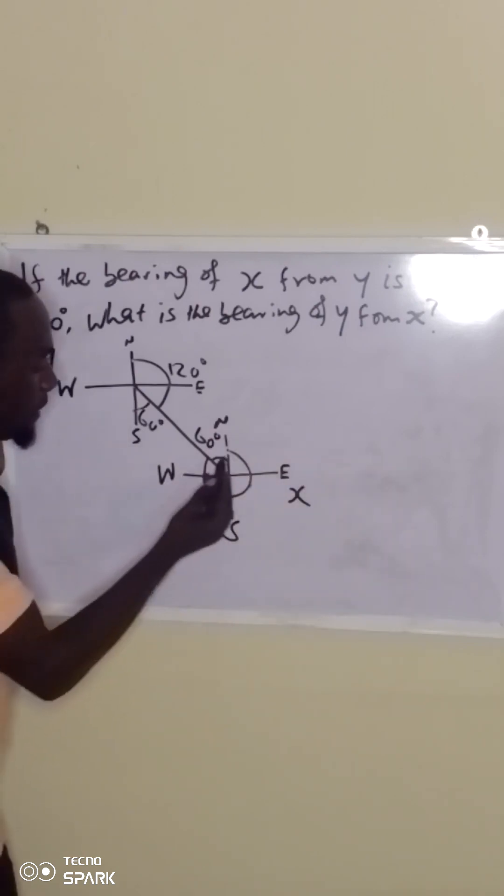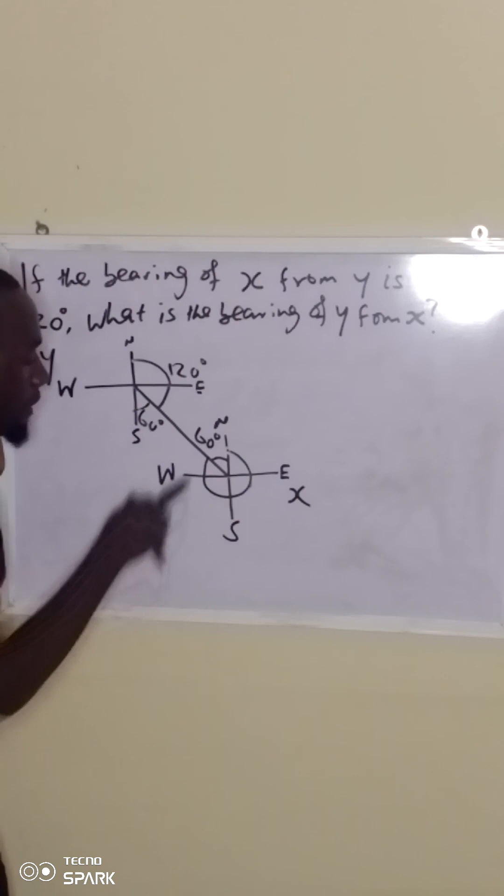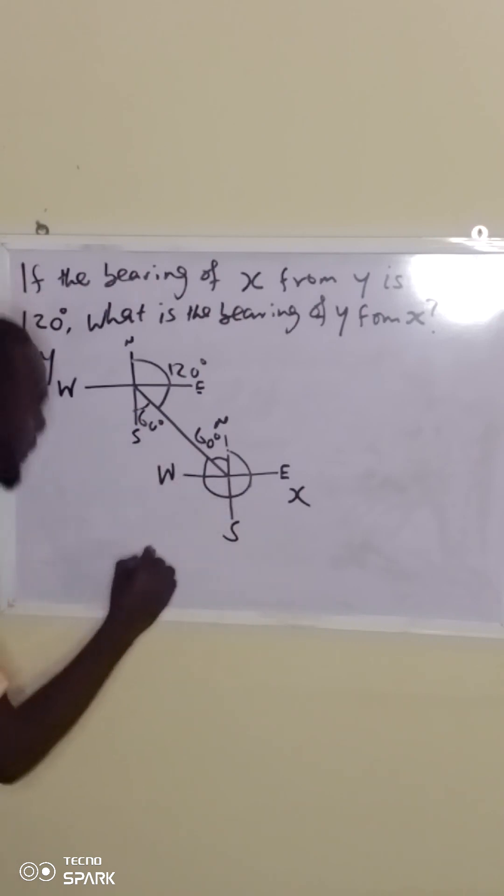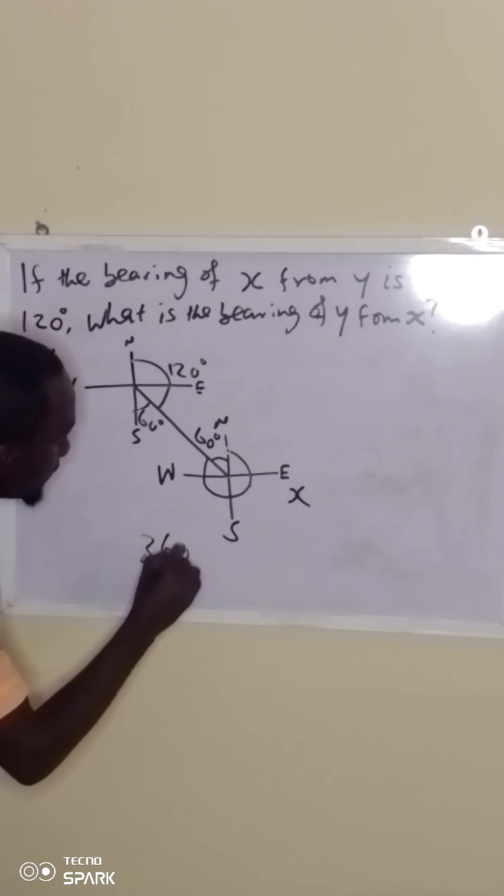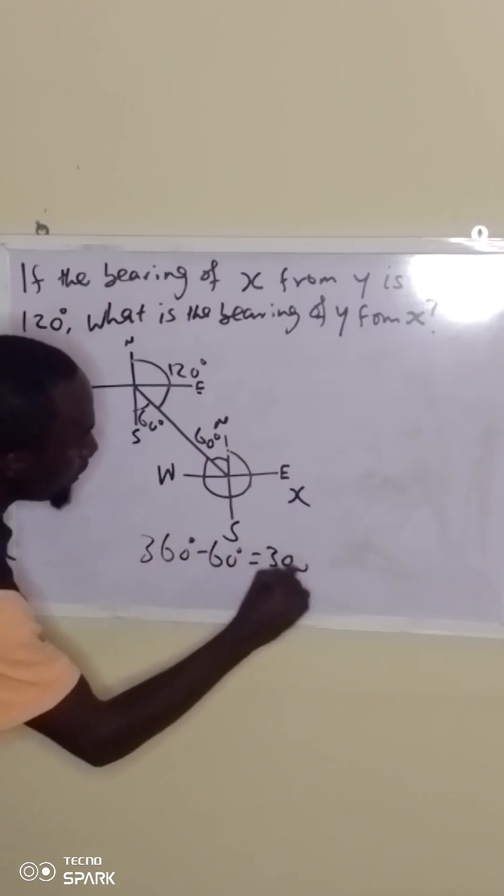Now, if you have this, next you can easily get this angle because the sum of the angles is 360 degrees for the four quadrants. We can simply remove 60 degrees from 360 degrees. That means we have 360 degrees minus 60 degrees, which gives us 300 degrees.